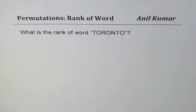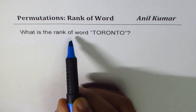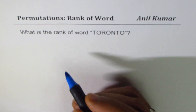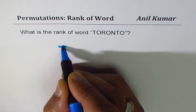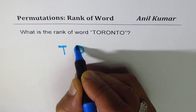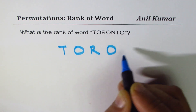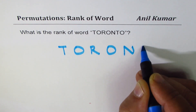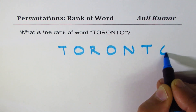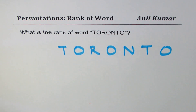I'm Anil Kumar, welcome to my series on rank of a word. We will now find the rank of a word where letters are repeated. The question here is: what is the rank of the word Toronto? It's a big word where T's are repeated and O's are repeated.